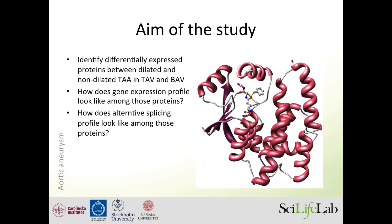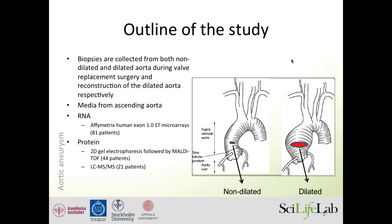Even individuals with tricuspid valves also develop widening. The hypothesis from the beginning of this study was that persons with tricuspid and bicuspid valves have different mechanisms of dilatation. We wanted to find out if that was true, and to see how differential expression of genes, differential expression of proteins, and alternative splicing look among these different patients. In collaboration with thoracic surgeons at Karolinska Hospital, we collected biopsies from both non-dilated and dilated aortas.